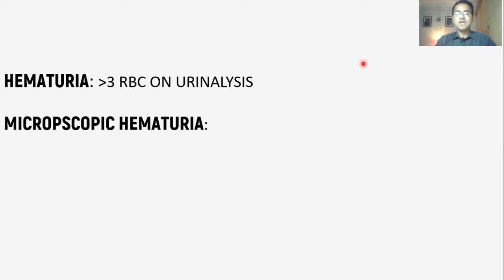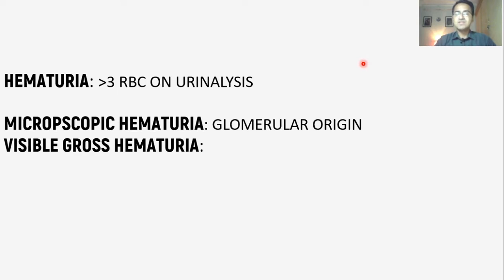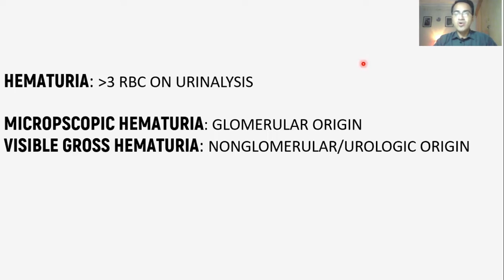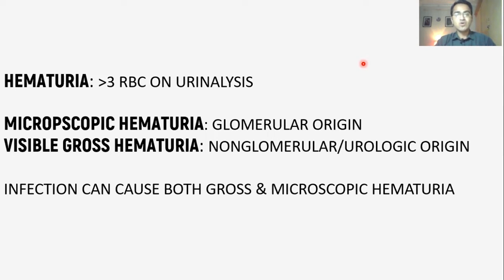Whenever there is microscopic hematuria, it is most often due to a glomerular origin cause inside the kidney. Whenever there is visible gross hematuria, it is most often due to a non-glomerular or urological origin. Infection can cause both gross and microscopic hematuria.